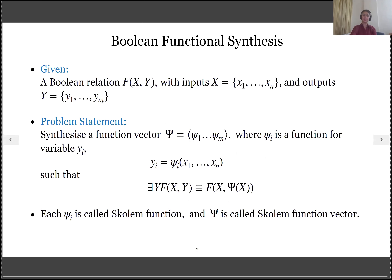Let us start with an introduction to Boolean Function Synthesis. We have a Boolean relation f between a set of variables x and y, where x is a set of n input variables x1 to xn and y is a set of m output variables y1 to ym. For each output variable yi, our aim is to synthesize a function ψi that takes x1 to xn as input. The bold ψ represents a function vector such that if we replace y by ψ in the relation f, it still holds true. That is, for all valuations of x for which f(x,y) evaluates to true, f(x, ψ(x)) should also evaluate to true. Such a function ψ is called a Skolem function, and the process of deriving it from a Boolean relation is known as Boolean Function Synthesis.